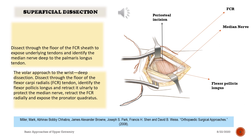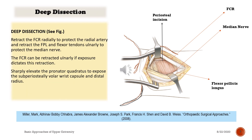Deep dissection: dissect through the floor of the flexor carpi radialis (FCR) tendon sheath. Identify the flexor pollicis longus and retract it ulnarly to protect the median nerve. Retract the FCR radially to protect the radial artery, and retract the FPL and flexor tendons ulnarly to protect the median nerve. Expose the pronator quadratus.